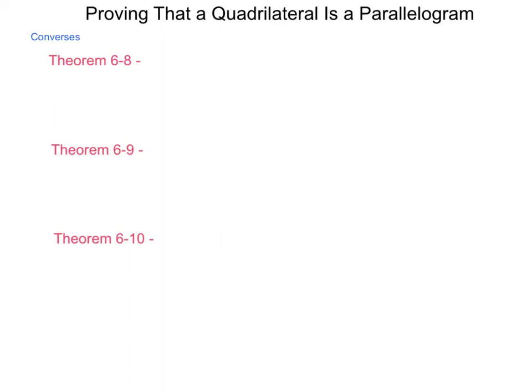In our last lesson, we looked at properties of parallelograms that defined them and helped make them different from other quadrilaterals. In this one, we're going to be looking at a lot of the converse theorems that are associated with those that will allow us to prove if a quadrilateral is in fact a parallelogram.